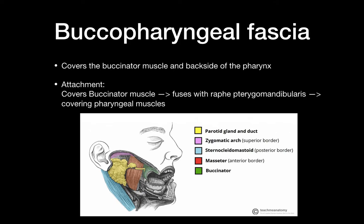The last fascia of this group is the buccopharyngeal fascia. It covers the buccinator muscle and then goes back and fuses with the pterygomandibular raphe, which is a bunch of ligaments located at the end side of the jaw area. Then it goes back and covers the backside of the pharyngeal muscles and then to the other side — it forms kind of a loop. I'm going to talk a little bit more about the buccopharyngeal fascia in the section on the fascias of the neck.